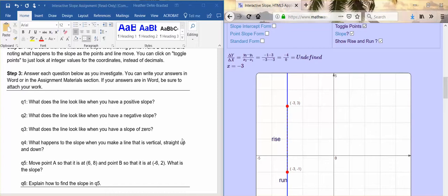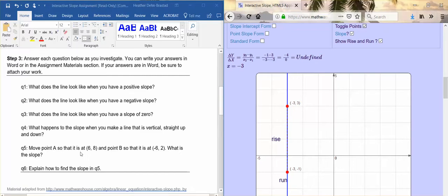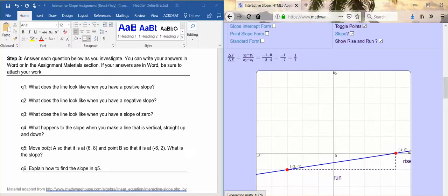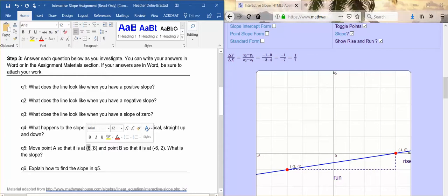They want you to move the point so that A is at six eight. Do I have six eight here? No. Let's change this to, and this will be changed on your worksheet for you, three four.